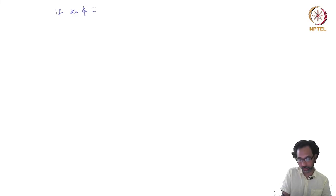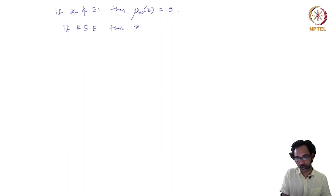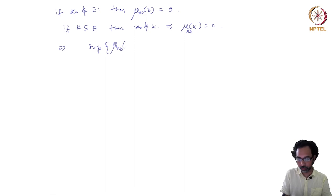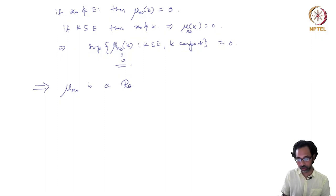If x_0 does not belong to E, then mu_{x_0}(E) = 0. For any compact subset K of E, x_0 does not belong to K, so mu_{x_0}(K) = 0. The supremum over compact subsets of E is also 0. So mu_{x_0} is both inner and outer regular and locally finite, which means mu_{x_0} is a Radon measure.